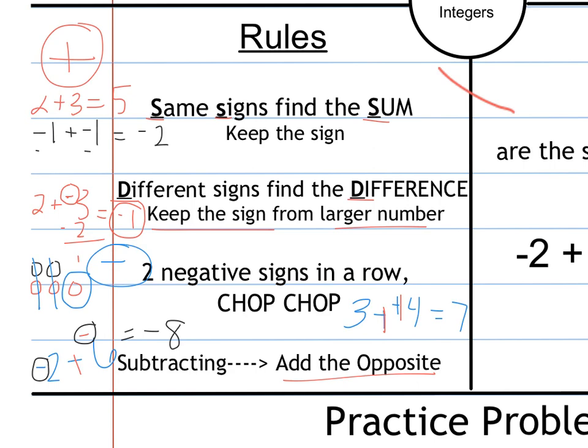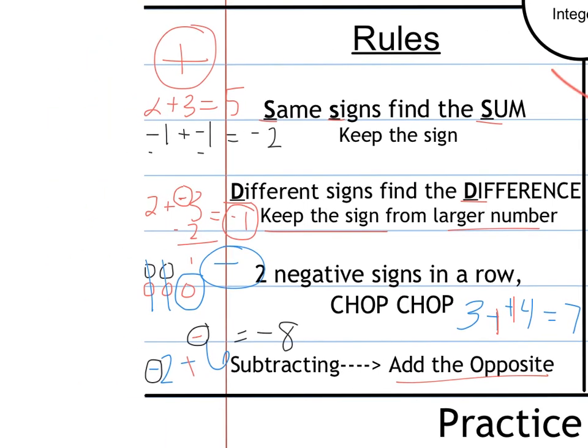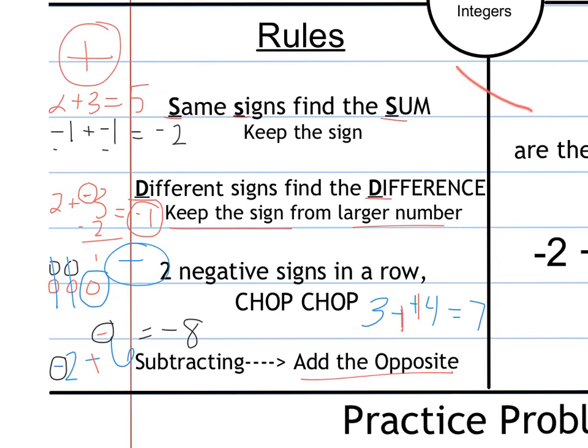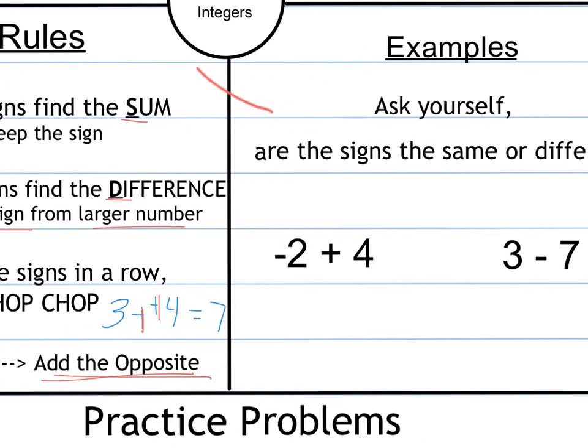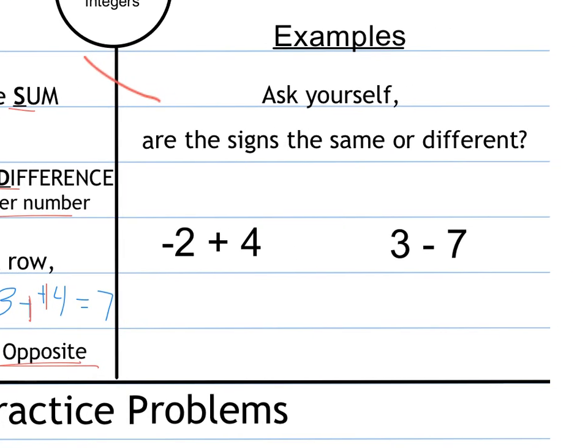A quick rundown of those rules, but they're very important, so make sure you write them down. Same signs, you're going to find the sum. Different signs, you're going to find the difference, keeping the sign of the larger one. If there's two negatives in a row, chop, chop, because subtraction is actually the same as adding the opposite. Very important. Some examples, make sure you're pausing along the way or rewinding if you have to. Whenever you see problems, always ask yourselves, are the signs the same or different when it's addition?